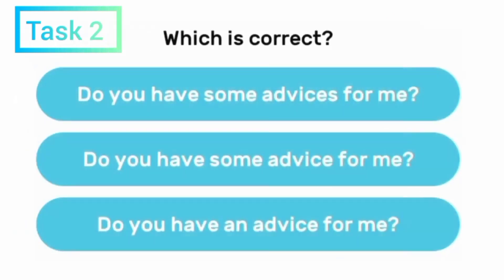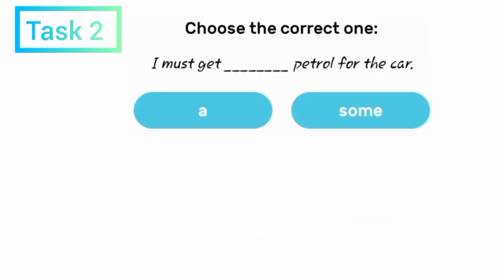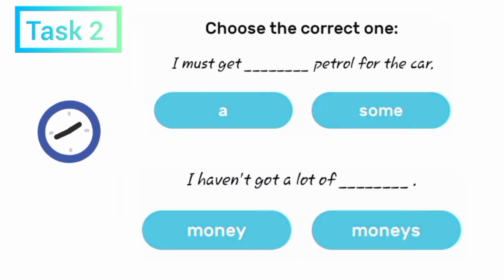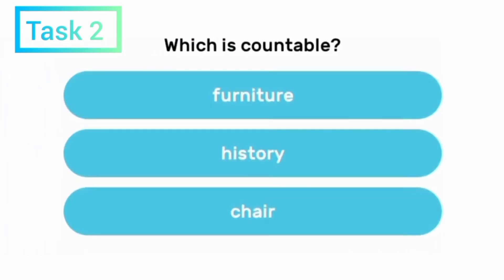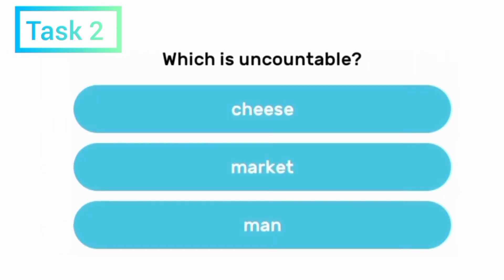Which is correct? 'Do you have some advices for me?', 'Do you have some advice for me?', or 'Do you have an advice for me?' Choose the correct one: 'I must get a or some petrol for the car.' 'I haven't got a lot of money or monies.' Which is countable — furniture, history, or chair? Which is uncountable — cheese, market, or men?